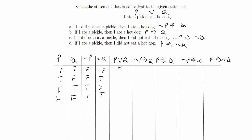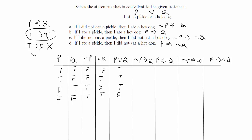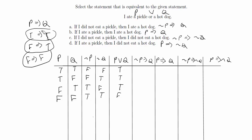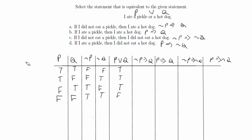P or Q is true, true, true, false. For the implication statements in the form 'if P then Q': if P is true and Q is true, the statement is true. If P is true but Q is false, the statement is false, because P is not implying Q. If the first proposition is false, the implication is true regardless — false implies true is true, and false implies false is also true.